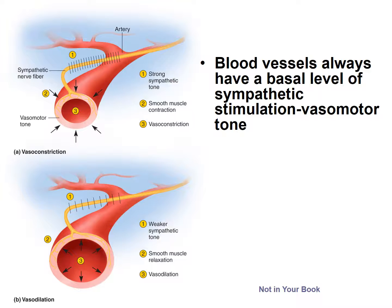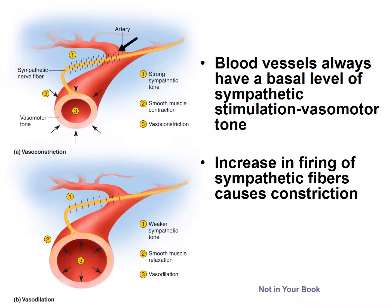There is a certain level of vasomotor tone due to the sympathetic nervous system sending action potentials to smooth muscles in the walls of blood vessels. If there is a desire to decrease the flow of blood to an organ, the sympathetic nervous system can increase the rate at which action potentials are sent to those smooth muscles. That would cause those smooth muscles to contract more, decreasing the size of the lumen of the blood vessel — causing vasoconstriction — which would increase blood pressure and decrease blood flow through that vessel.